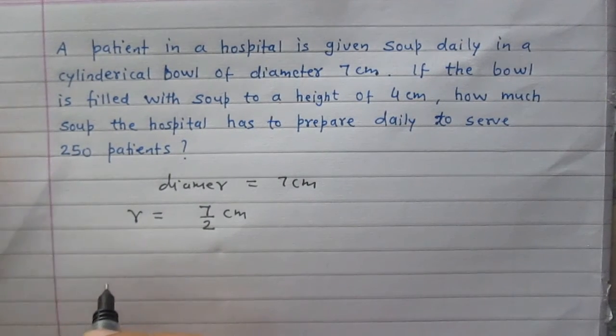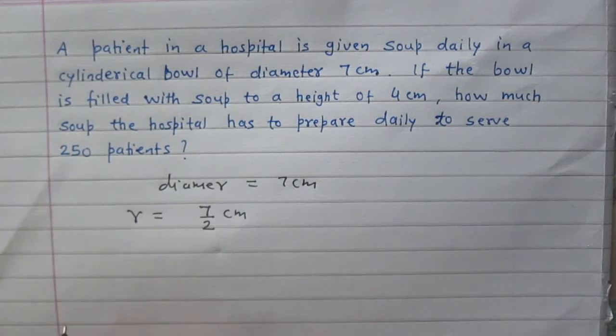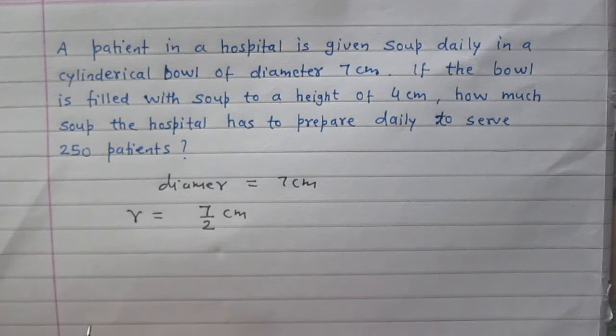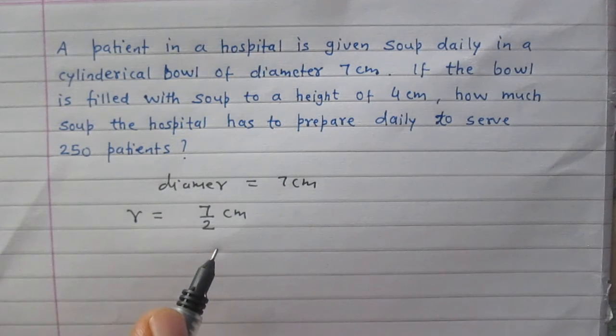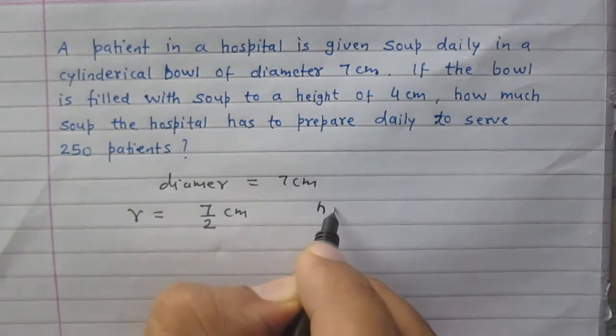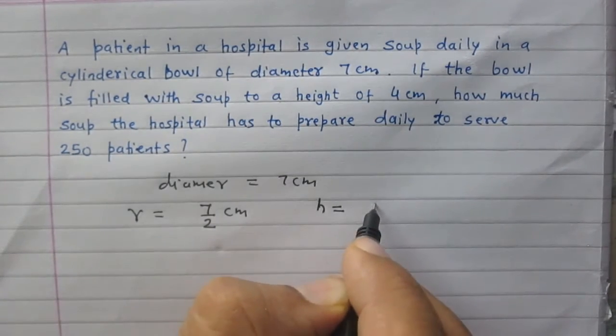We are given that soup in the bowl is up to the height of 4 cm. So to find the volume of soup in the bowl, we assume the cylinder formed by the liquid soup has a height of 4 cm. 4 cm is not the height of the cylindrical bowl, it is the height up to which the soup is filled. The volume is determined by the height of the soup in the cylinder, not by the height of the bowl. So the height of the cylinder of soup is 4 cm.